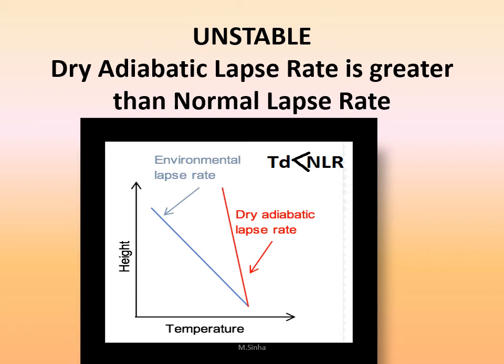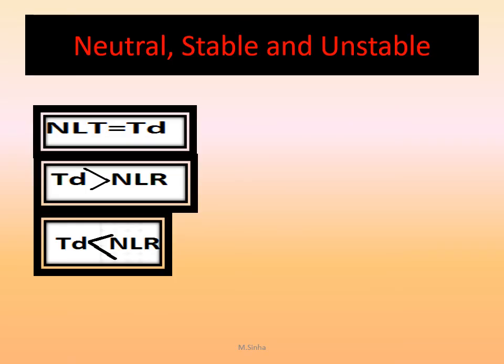Looking at the diagram: the temperature axis, height axis, red line is the dry adiabatic lapse rate, and this other line is the environmental or normal lapse rate. If the normal lapse rate is lower than the dry adiabatic lapse rate — that is, if the dry adiabatic lapse rate is greater than the normal lapse rate — then this is known as an unstable situation, an unstable atmospheric condition. If the dry adiabatic lapse rate is greater than the normal lapse rate, the situation is unstable; if the normal lapse rate is greater than the dry adiabatic lapse rate, the situation is stable.